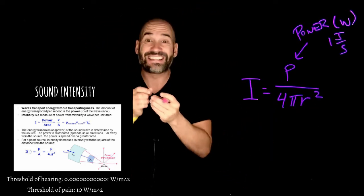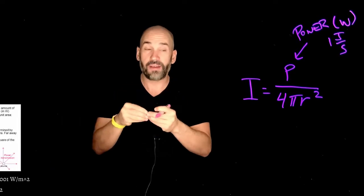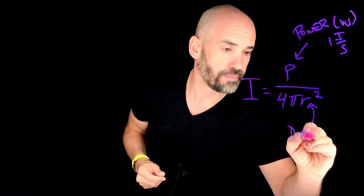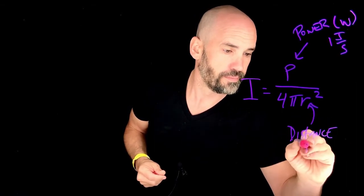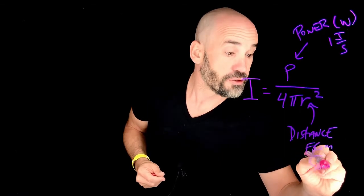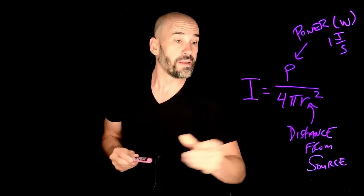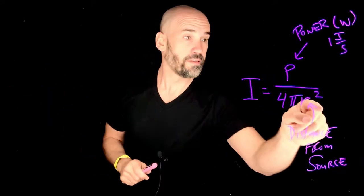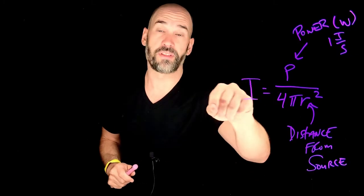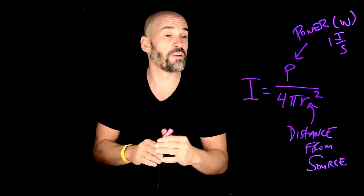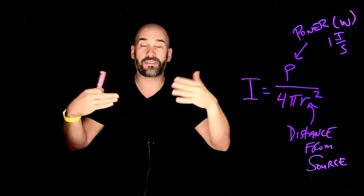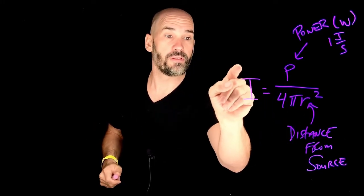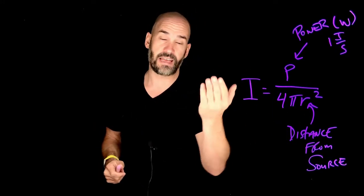The r here is the distance you are away from the source creating the sound. So it makes sense that the bigger r is — the farther you are from the source — the bigger the denominator gets, and that means the lower the sound intensity gets. This basically tells you that for a given source putting out some number of watts, the farther you are away, the weaker and less intense the sound is going to be.